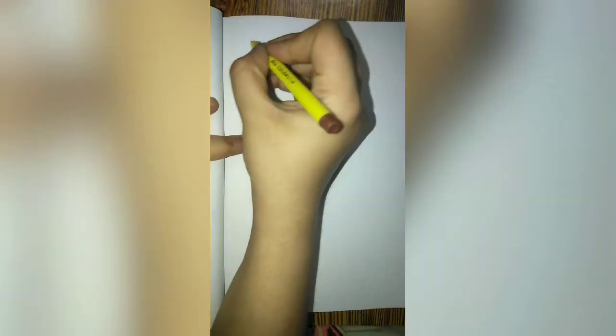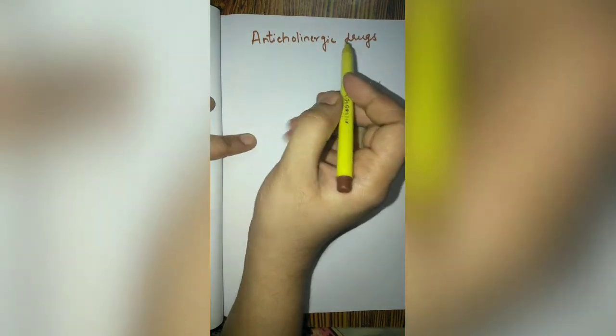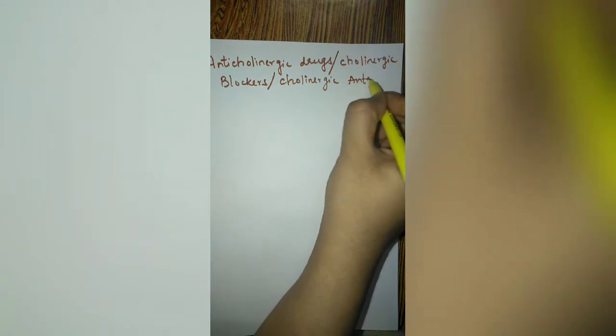Hello to everyone. Today's topic is anticholinergic drugs. Anticholinergic drugs means these are the agents that act against the activity of cholinergic drugs. These agents are also known as cholinergic blockers, or cholinergic antagonists — all mean one and the same.